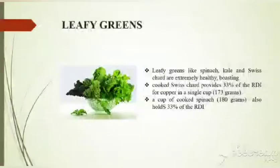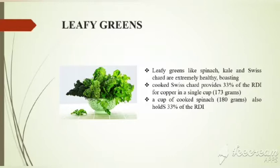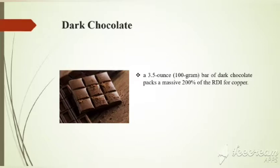For copper intake, leafy greens are an important source. Greens like spinach, kale, and Swiss chard are extremely healthy. A cup of cooked Swiss chard provides around 33% of the daily copper requirement. A cup of cooked spinach also gives 33% of required copper. Dark chocolate — around 100 grams — provides a massive 200% of the daily copper requirement.